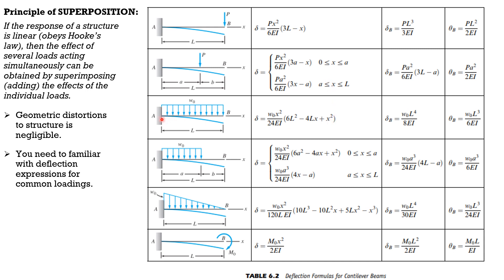The first and next cases are common, and these are also common, so just be familiar with these deflections and slopes at the free end. For the uniform load case: W₀L⁴ over 8EI, and theta B is WL³ over 6EI. For a cantilever beam partially loaded with uniform load of length A: at B, the deflection is W₀A³ over 24EI times (4L − A), and theta B is WA³ over 6EI.